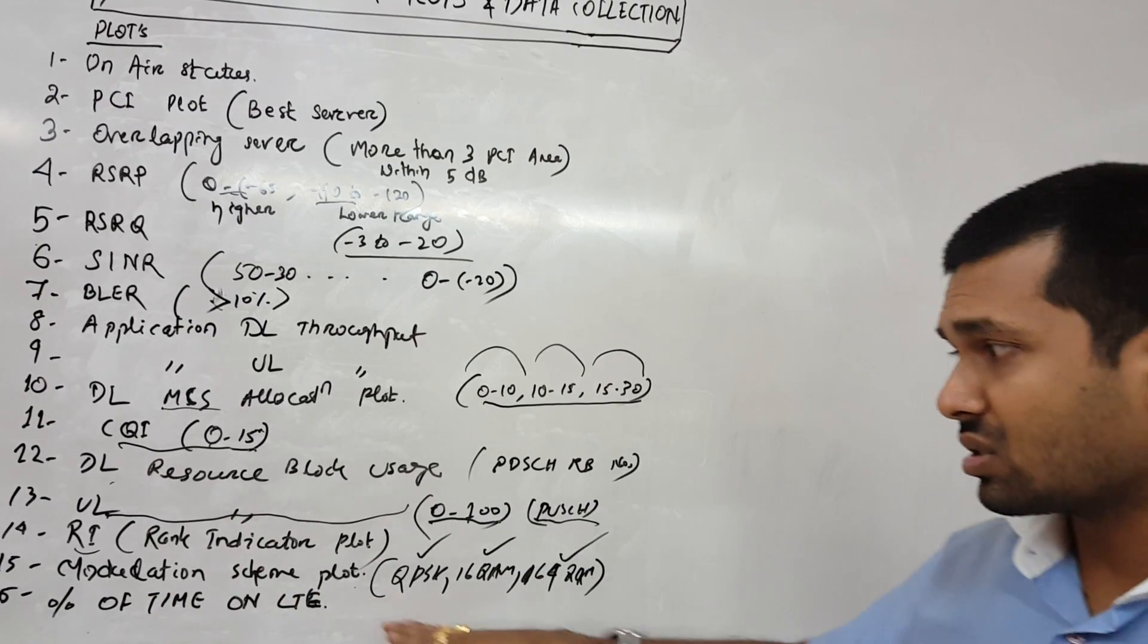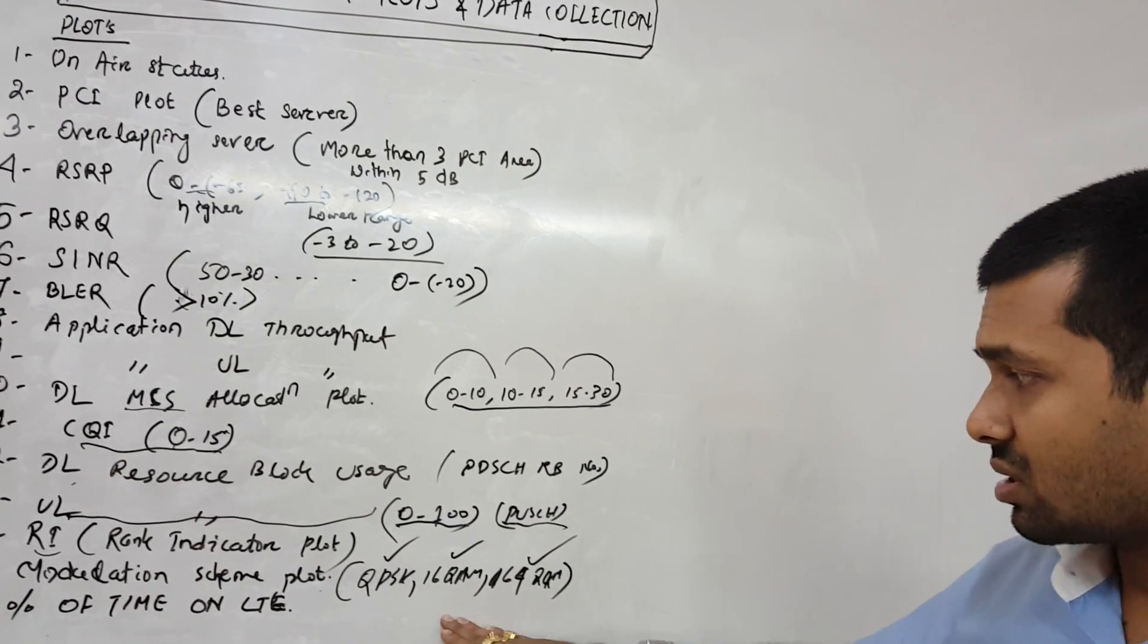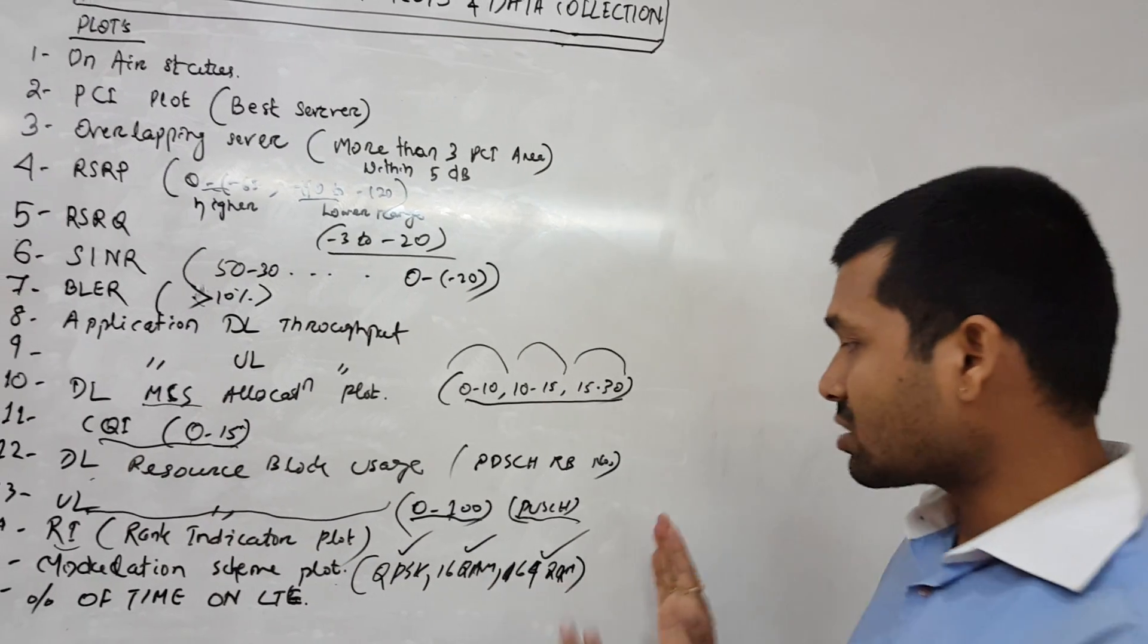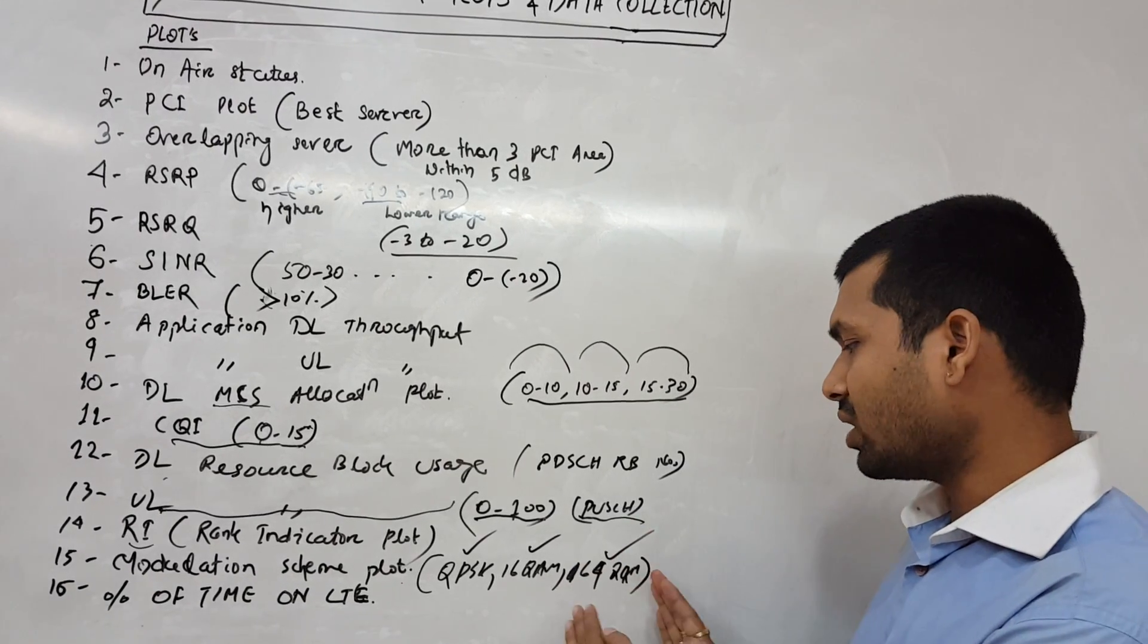Then modulation schemes like QPSK, 16QAM and 64QAM. We should have best qualities within 64QAM - most of the quality samples would be here. Then 16QAM, QPSK would be very minimum.